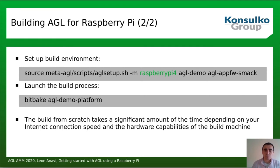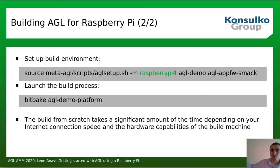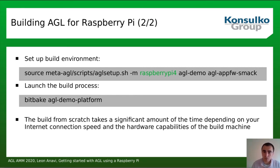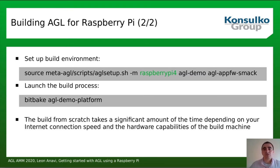The build from scratch takes a significant amount of time depending on your internet connection, because BitBake has to download the source code for each recipe, then build and package it. Build time also depends on your build machine's hardware capabilities — a build from scratch can take hours. It's recommended to use more powerful machines to cut the build time. Importantly, this long build time is only for the first build; after that, Yocto and OpenEmbedded allow you to reuse downloads and shared state for incremental builds, which can be very fast.